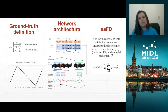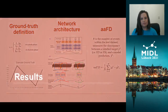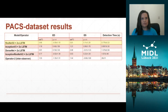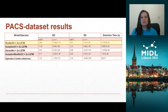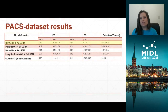Average absolute frame difference notation was used as the evaluation metric. The average annotation time for each frame of interest was 26 seconds, whereas the automated model took less than 1.5 seconds.